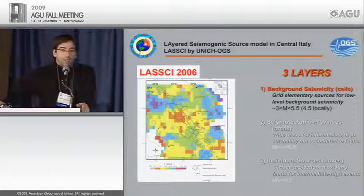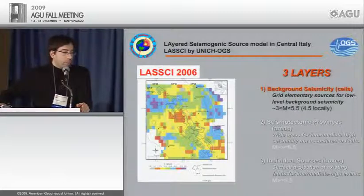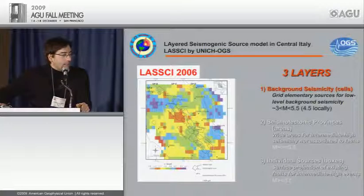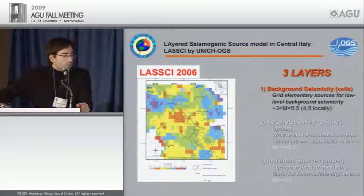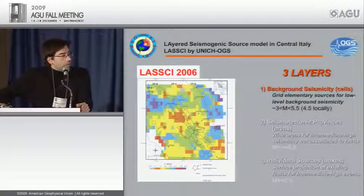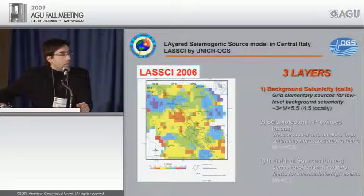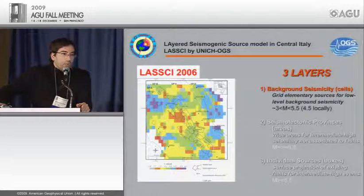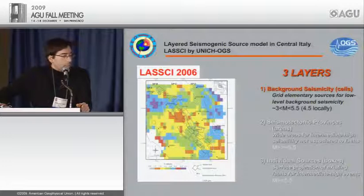The model incorporates three layers of information. The first is background seismicity, which collects seismicity from magnitude 3 to 5.5, using a regularly spaced grid with 20 km search radius. Within each circle, A and B coefficients of a truncated Gutenberg-Richter relation are computed. We used the declustered instrumental catalog from the working group CSTI published in 2001, covering 1981 to 1996.